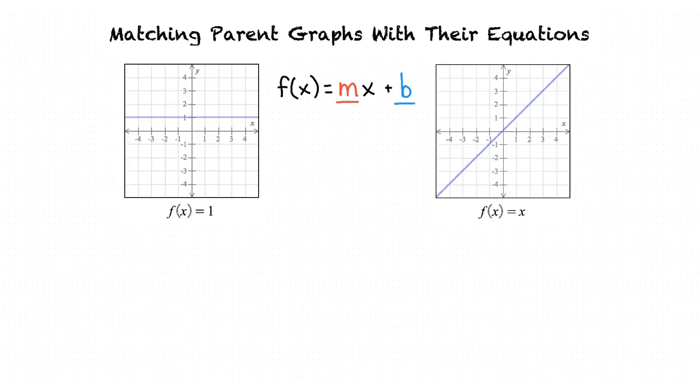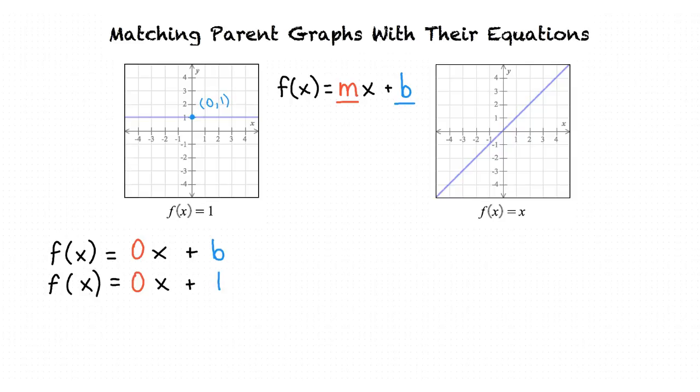Looking at f(x) = 1 first, the line is perfectly horizontal, meaning it has a slope of 0. It is for this reason that there is nothing written in for mx. Another way to write this equation could be f(x) = 0x + b. The line intersects the y-axis at the point (0, 1), so we substitute 1 in for b, giving f(x) = 0x + 1. Since anything times 0 equals 0, the final result is f(x) = 1.